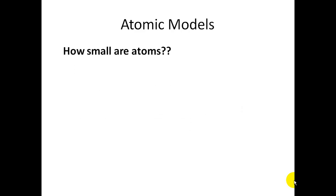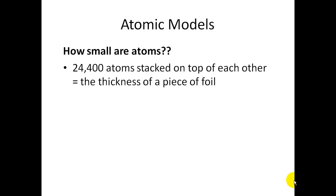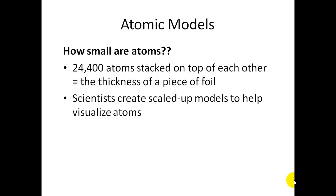Atomic models. How small are atoms? Think about it. Here's a way to visualize it. 24,400 atoms, they are stacked on top of each other, will be the thickness of a piece of foil. So that's how small they are. So because it's so small, scientists create these models, like the picture I showed you, to help visualize atoms.